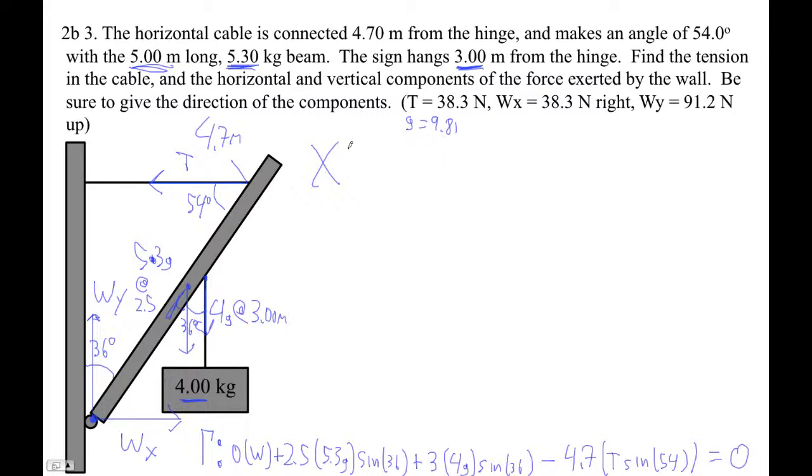Okay, in the x direction, this is fun. I love this one, right? In the x direction, all we've got is the tension and the wall in the x direction. So we have an identity equation, right? Wx minus T. Wx is positive because it's to the right. T is negative because it's to the left. It's zero.